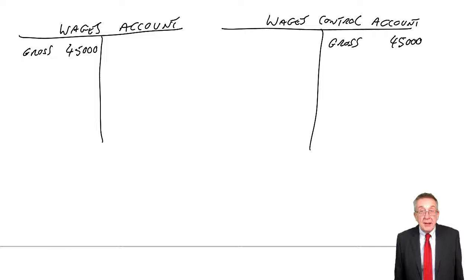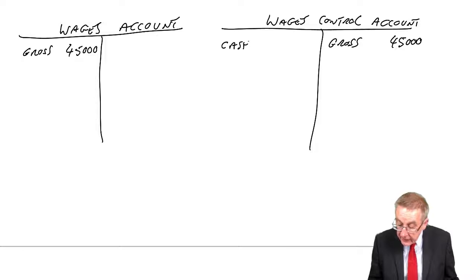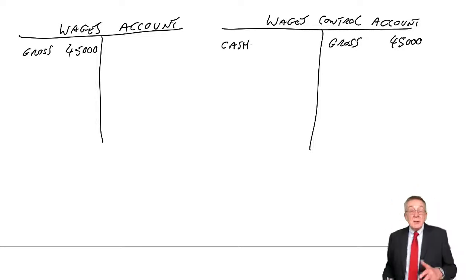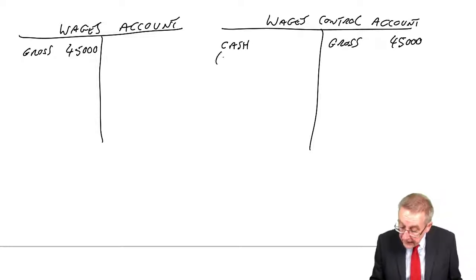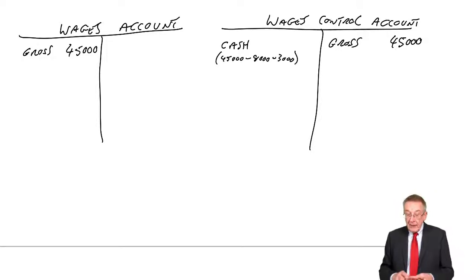However, of course, we can't pay the employee $45,000. And it says in item one, there are deductions for employees taxes of $8,000 and deductions for employees pensions of $3,000. And so how much are we going to pay the employee? Credit cash, debit the control account. We wanted to pay the $45,000, but we've got to take these deductions. It's $45,000 minus the tax of $8,000, minus the pensions of $3,000. So the cash actually paid, $45,000 minus $8,000 minus $3,000, is $34,000.